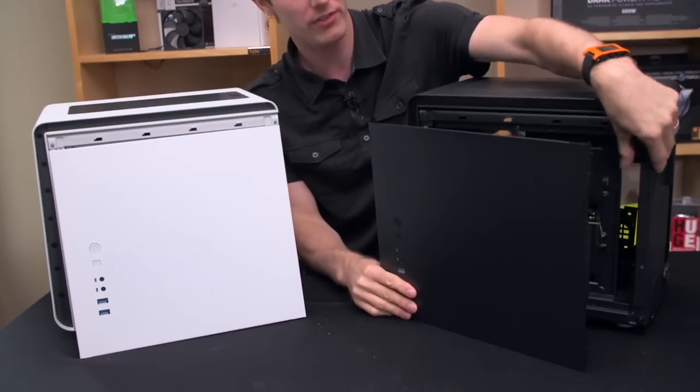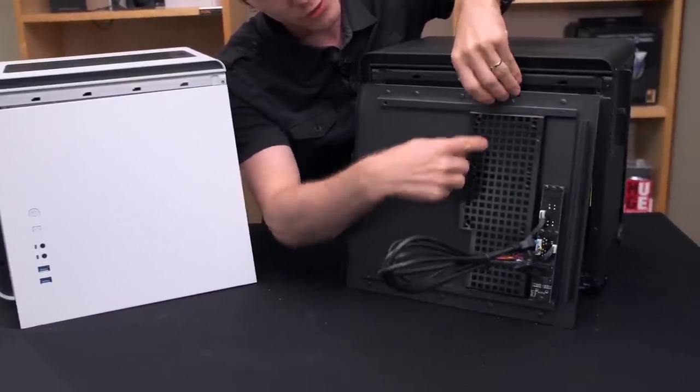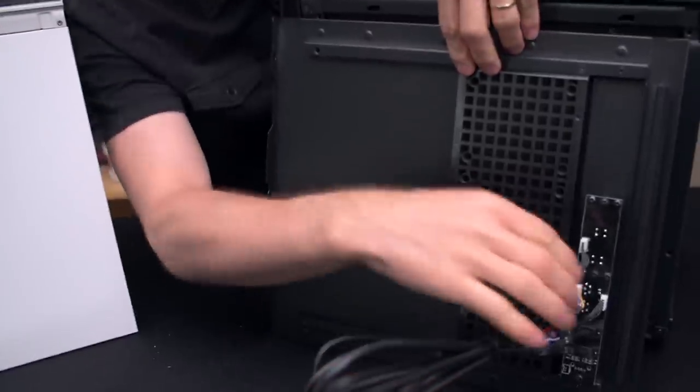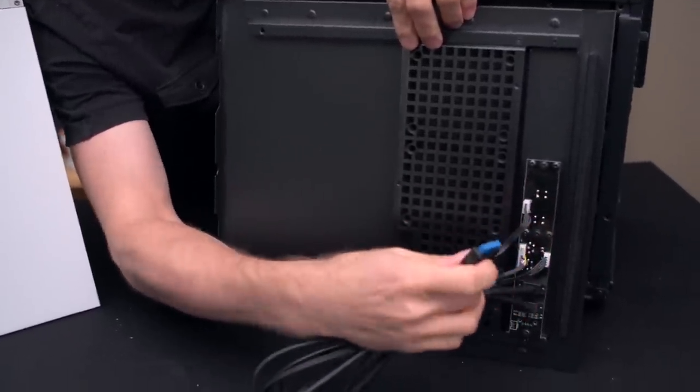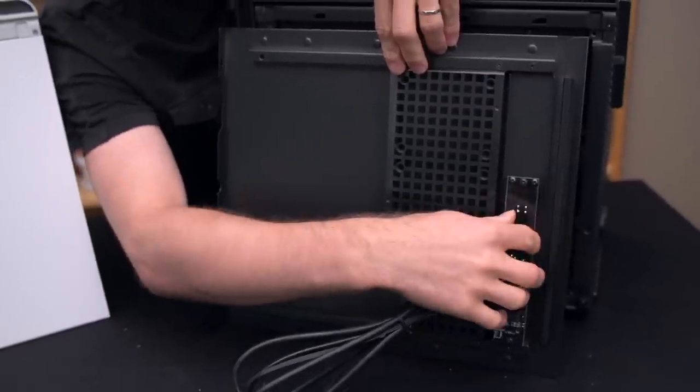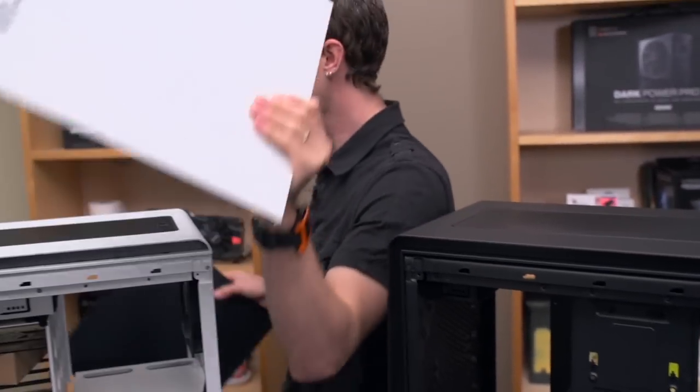Removing these side panels we are going to reveal a couple of things. Number one is the SSD mounts that are built into the sides here. You can put two 2.5 inch drives there no problem, as well as all the interior IO. That USB 3.0 port can be adapted to USB 2. There is an included adapter and there is a custom PCB here that handles all of the IO.